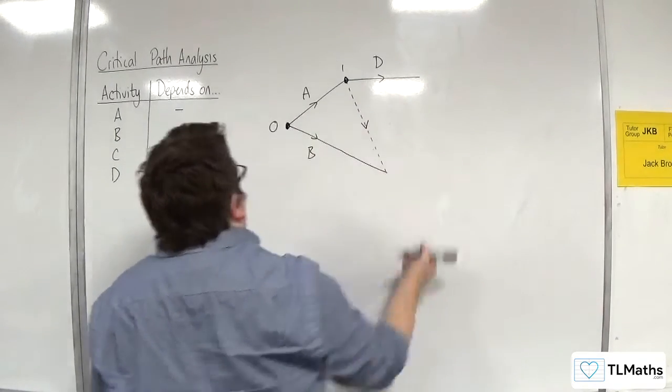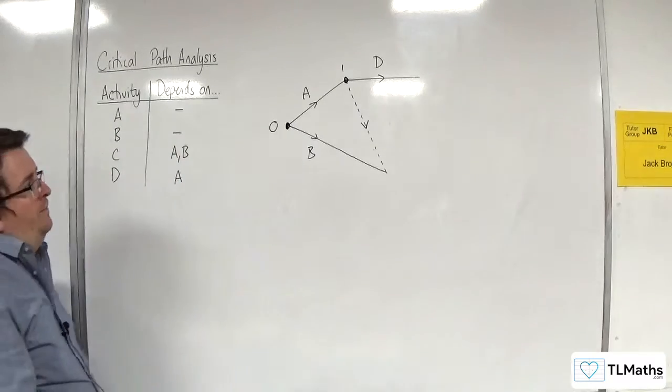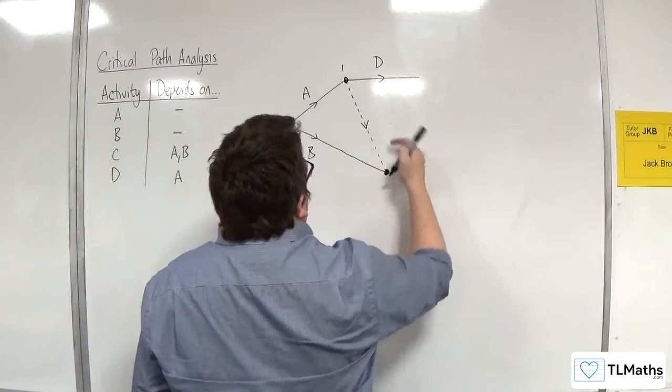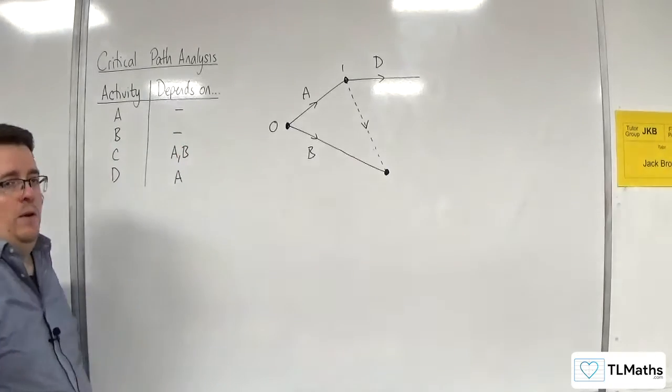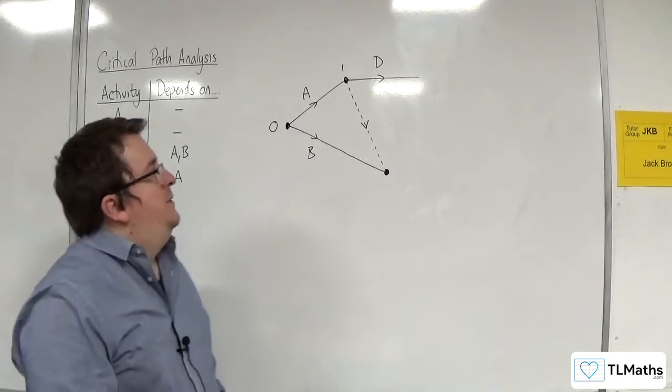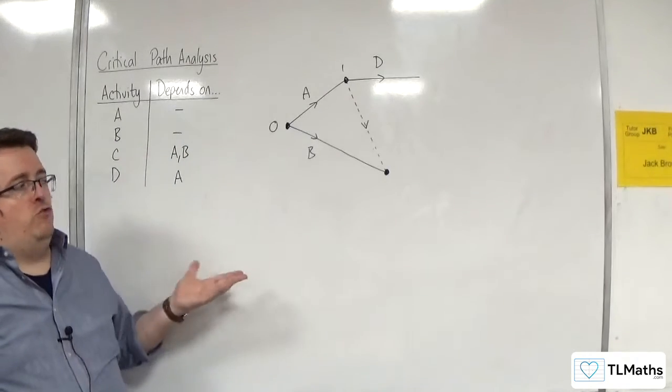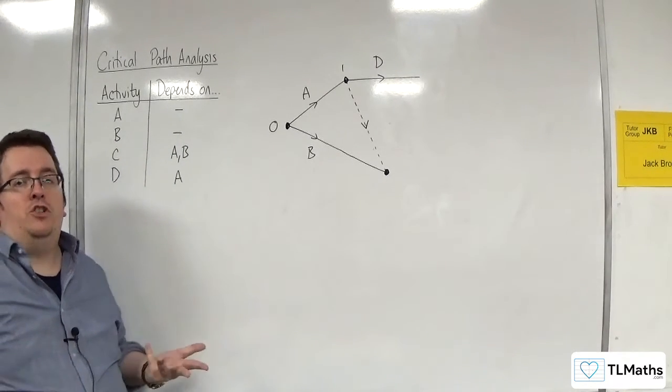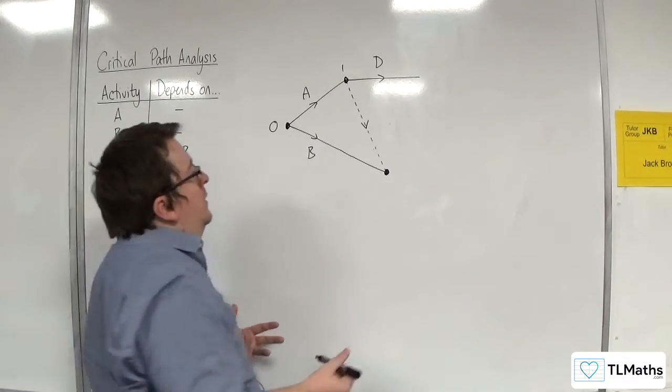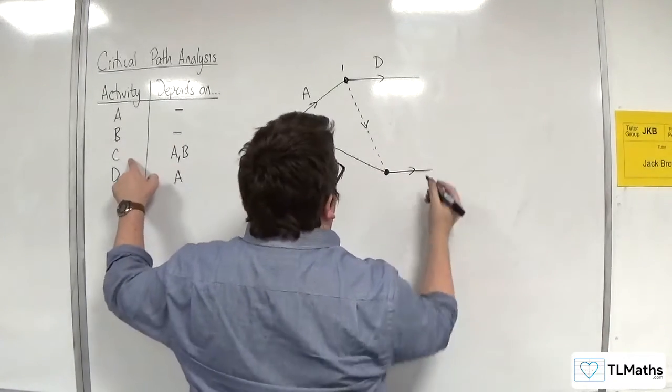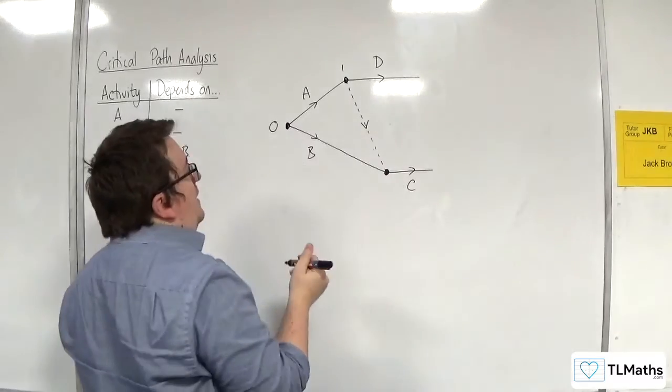So I'm going to put an arrow on it, indicating the direction. So this activity, I don't need to label it with a letter because it doesn't actually exist. It's a dummy activity. And it's got a duration of zero. So there's no time attached to it.